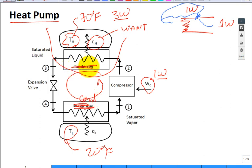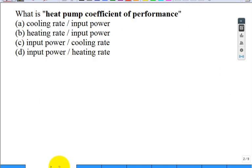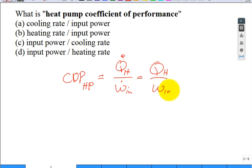So what about the heat pump coefficient of performance? I like to use COP_HP and it's what you desire: either Q_dot for the hot divided by W_dot_in, or just Q_hot divided by W_in. So it's the heating rate divided by the input power. What you desire, or what you have to pay for it.